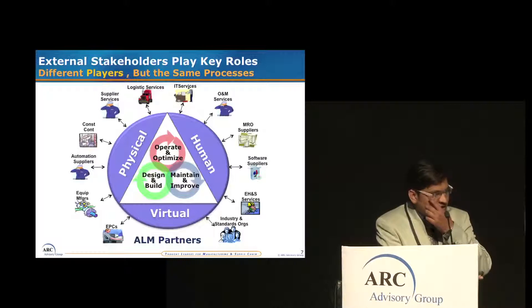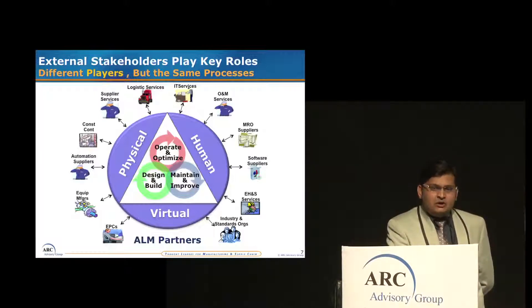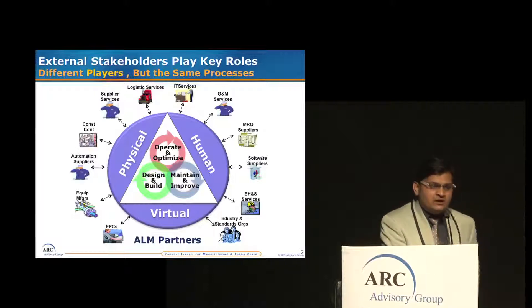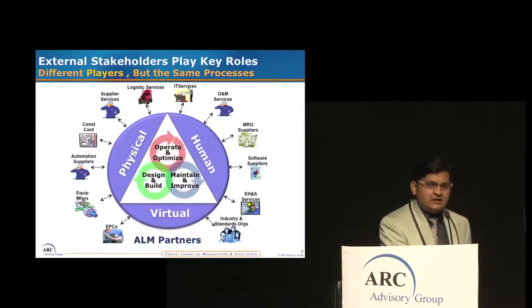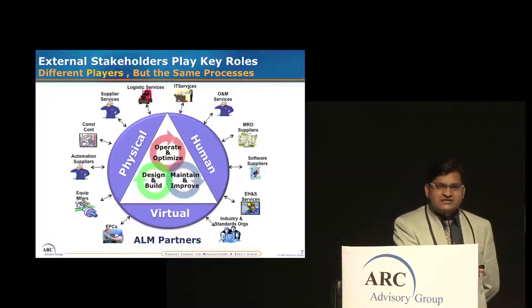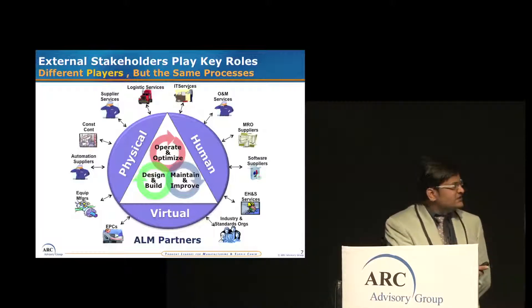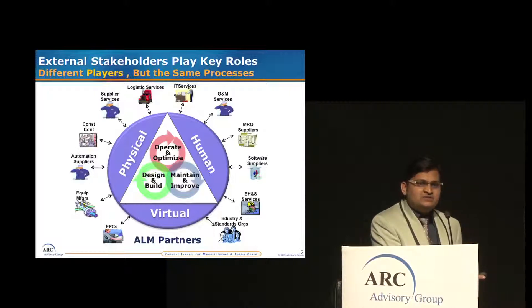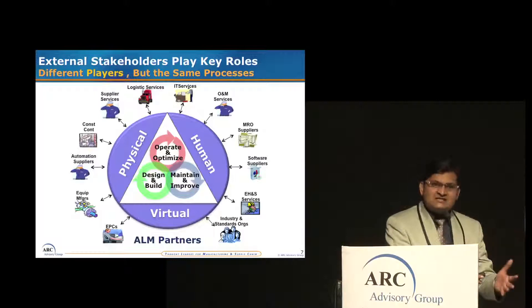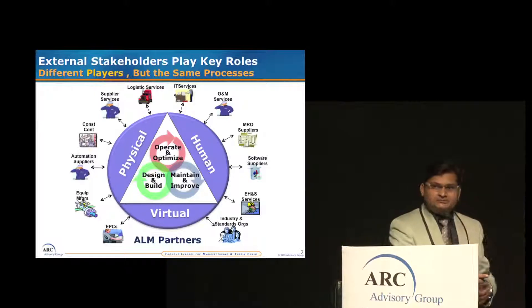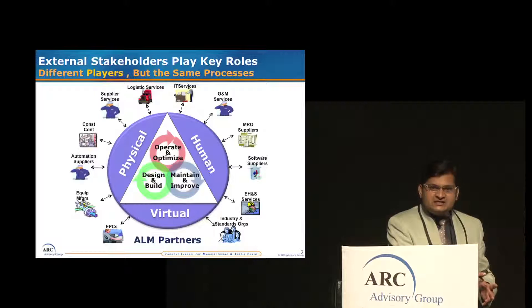For the same process, we have physical, human, and virtual assets — all three are equally important. We have a lot of stakeholders during the entire asset lifecycle, and all these stakeholders have to share information throughout the lifecycle of a plant, which is designed, operated, and maintained. The traditional model is basically linear in nature — there's a start and an end. But in reality, once it starts there's no end; the project continues, modification continues, expansion continues. There's a lot of information exchange and interactions that need to happen between all these departments.